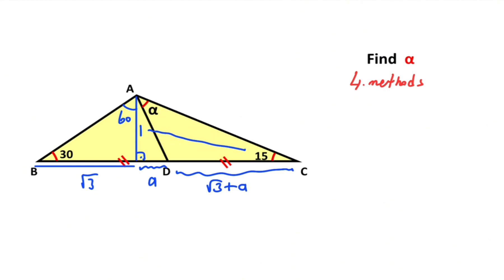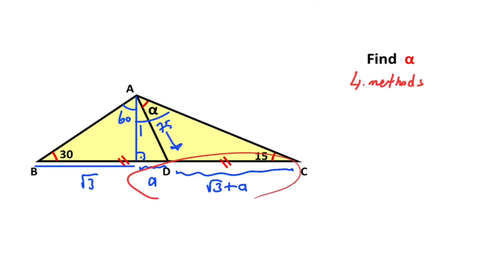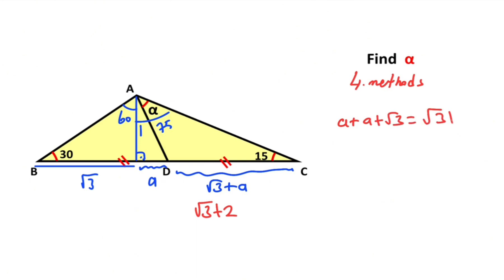Therefore if you focus on this triangle, if there is a one unit opposite side of the 15 degrees, the opposite side of the 75 degrees must be equal to (√3 + 2) units. Therefore: a + a + a + a + √3 = √3 + 2, so 2a = 2, meaning a is going to be one.